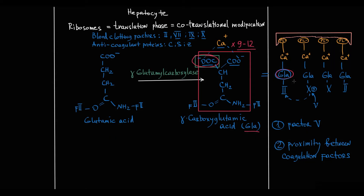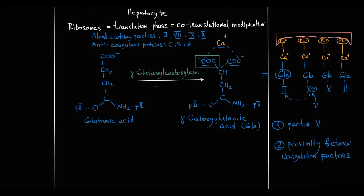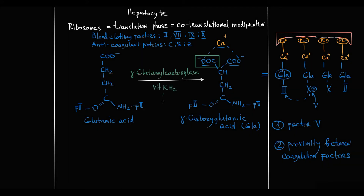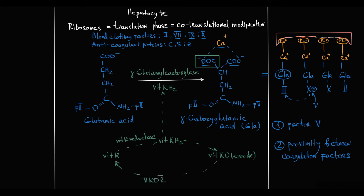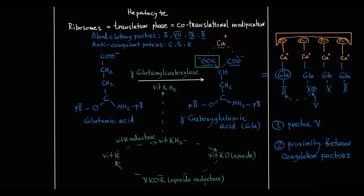Most importantly, the cofactor of gamma-glutamyl carboxylase is vitamin K in its reduced form. This reduced form of vitamin K is produced by reduction of vitamin K by the enzyme vitamin K-reductase. With gamma-carboxylation, reduced vitamin K is converted to vitamin K epoxide, which is subsequently recycled by an epoxide-reductase enzyme complex back to vitamin K. Without vitamin K, additional carboxylation becomes impossible. That is why factors 2, 7, 9, and 10 are called vitamin K-dependent — because without vitamin K, they are functionally incapable.